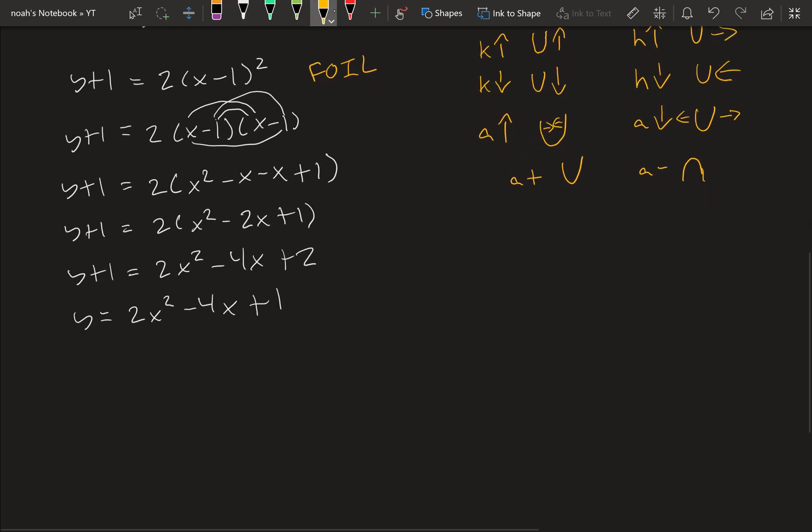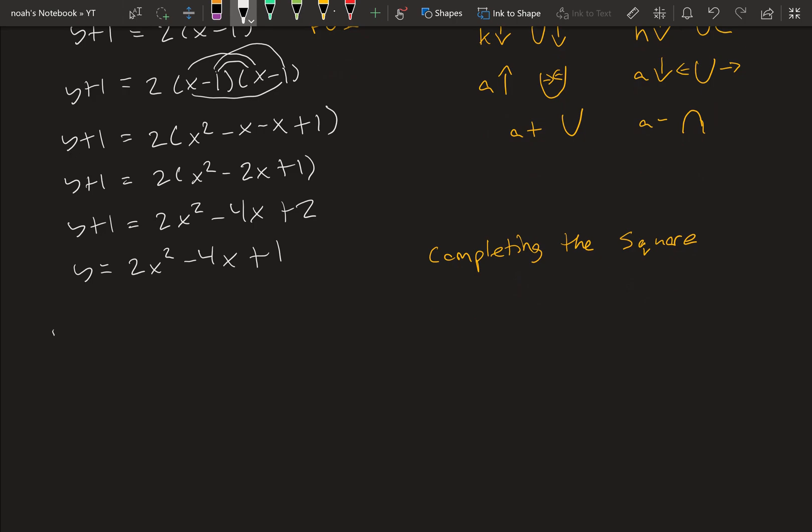To convert it back to vertex form, we can use something called completing the square. To do this, first step is to move the constant with on the side of y. y minus 1 equals 2x squared minus 4x.